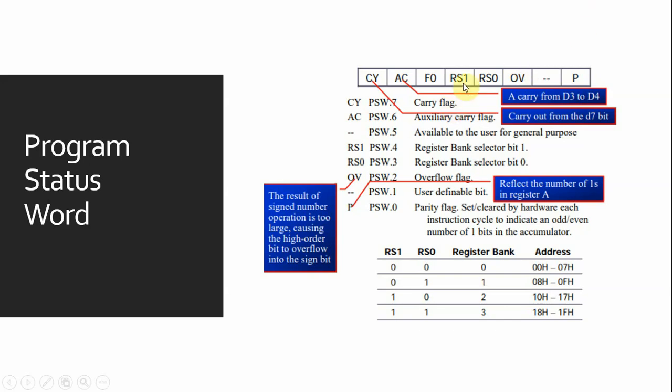RS1, PSW.4, is the register bank selector bit 1. PSW.3 is the register bank selector for bit 0. PSW.2 is for overflow flag. Here you can see this is for overflow flag. PSW.1 is again a user-defined bit, and PSW.0 is the parity flag.